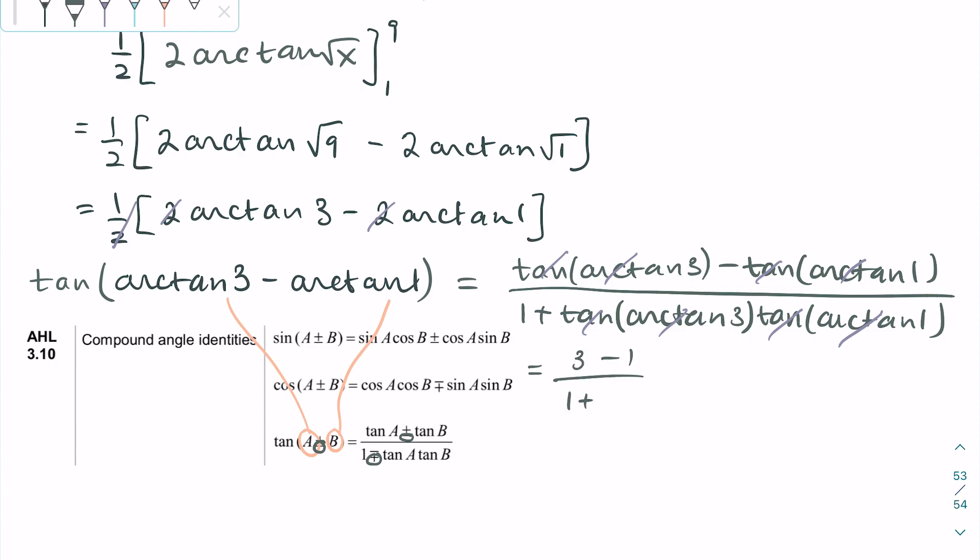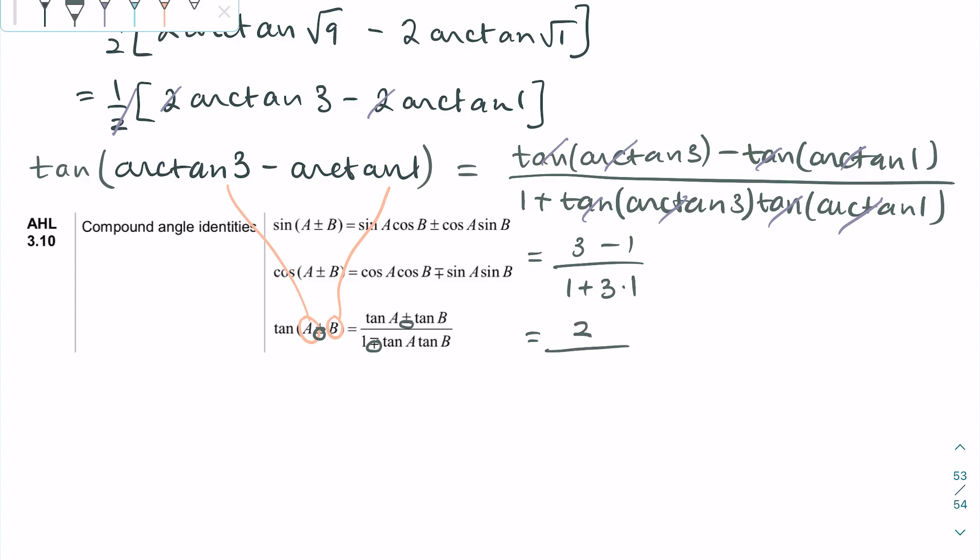This is convenient because the tangents and arctangents cancel each other out, leaving us with a numerical value of one-half.